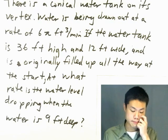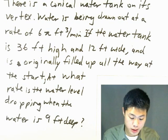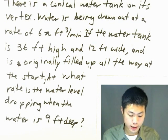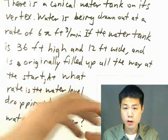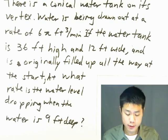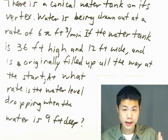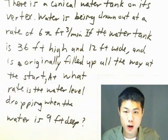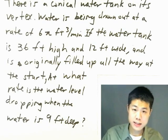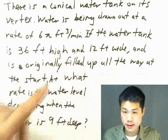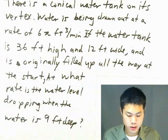Well, first of all, what are the two quantities that we need to find the relationship? Well, we're actually given three, right? We're given the volume. Well, drawn out at the rate. So if water is being drawn out, that's affecting the volume of the water in a water tank. So volume is one. If the water tank is 36 feet high, okay, height, that's another one, and 12 feet wide.